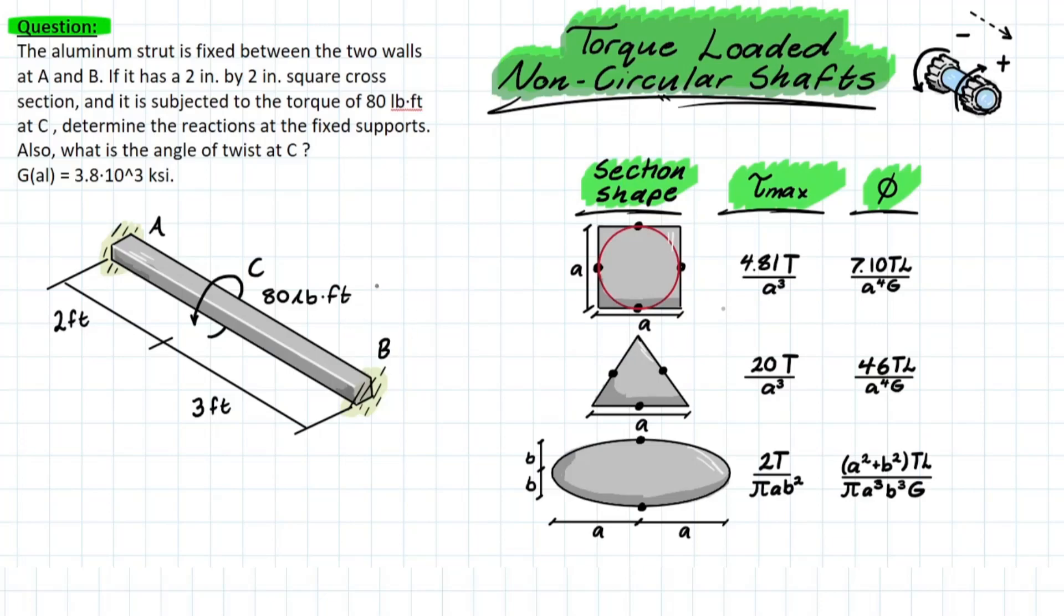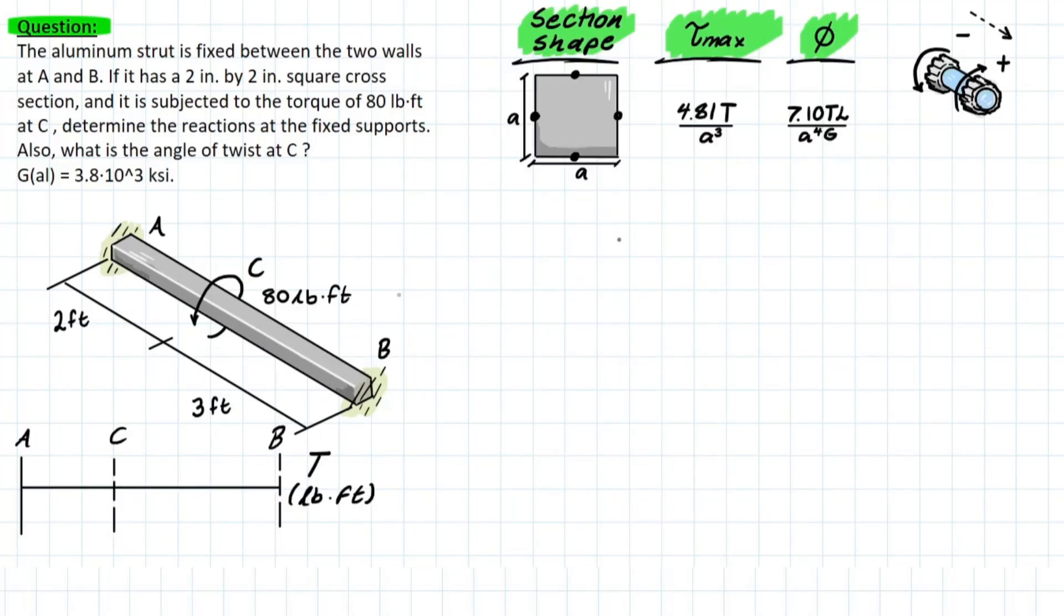Now we can hop into the problem. So now that we have all the theory covered, we can finally hop into the problem. The problem goes as follows: We have the aluminum strut which is fixed between two walls A and B, and it's asking us if it has a 2 inch by 2 inch square cross section and is subject to a torque of 80 pounds-feet at C, determine the reactions at the fixed supports and also what is the angle of twist at C.